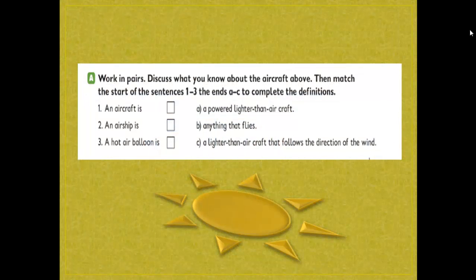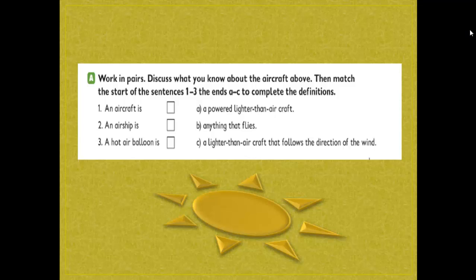Work in pairs and discuss what you know about the aircraft above, then match the start of the sentences one, two and three to the ends a, b, c to complete the definitions. We have three words: an aircraft, an airship, and a hot air balloon. We want to complete their definitions by matching with the other column. The first one: an aircraft is anything that flies — we can match it with letter b.